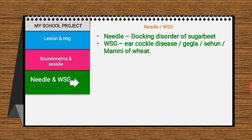The wheat seed gall nematode Anguina tritici causes ear cockle disease, also known as giga, chigan, or mamni of wheat. Ear cockle very often occurs in association with tundu disease of wheat, caused by the bacterium Clavibacter (Corynebacterium) tritici.